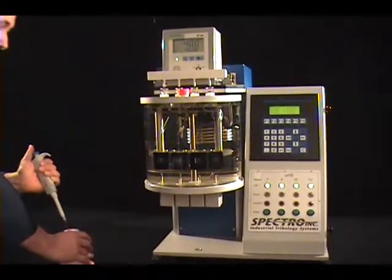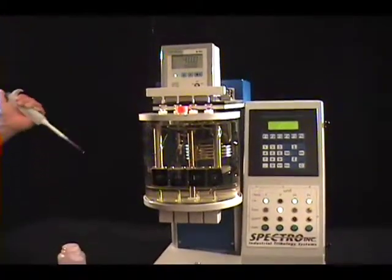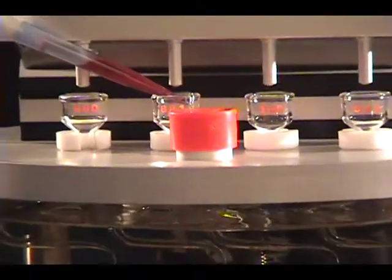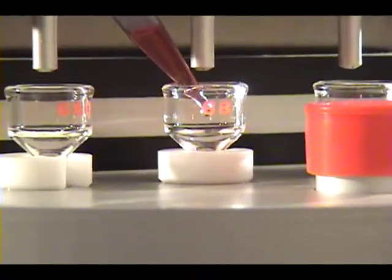All measuring tubes function independently of each other, which allows for a high sample throughput of up to 60 samples per hour to ASTM precision. The SpectroVisc uses a very small sample volume between 0.3 and 0.6 milliliters.